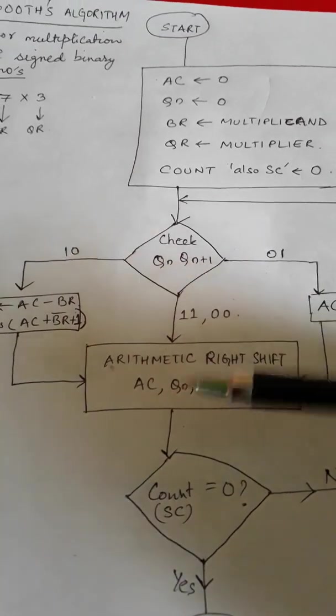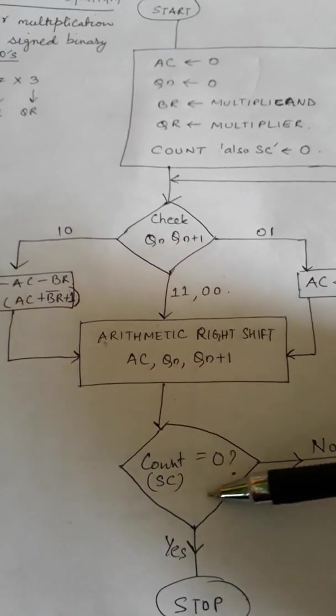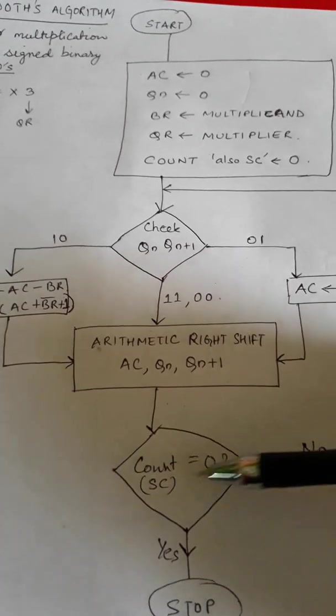After that we will check the value of count. Count is to check whether we have reached the end or not. If count is not zero, that means if some bits are still...